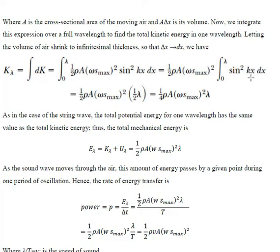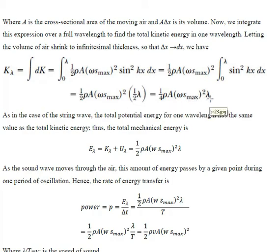When integrating sin²(kx), we use the identity: sin²(kx) = (1 − cos(2kx))/2. The cosine term integrates to zero over a full wavelength, and the constant term gives one-half·lambda. So the kinetic energy associated with one wavelength of the sound wave is: K_lambda = (1/4)·rho·A·(ω·S_max)²·lambda, where rho is the air density, A is the cross-sectional area, omega is the angular frequency, S_max is the displacement amplitude, and lambda is the wavelength.